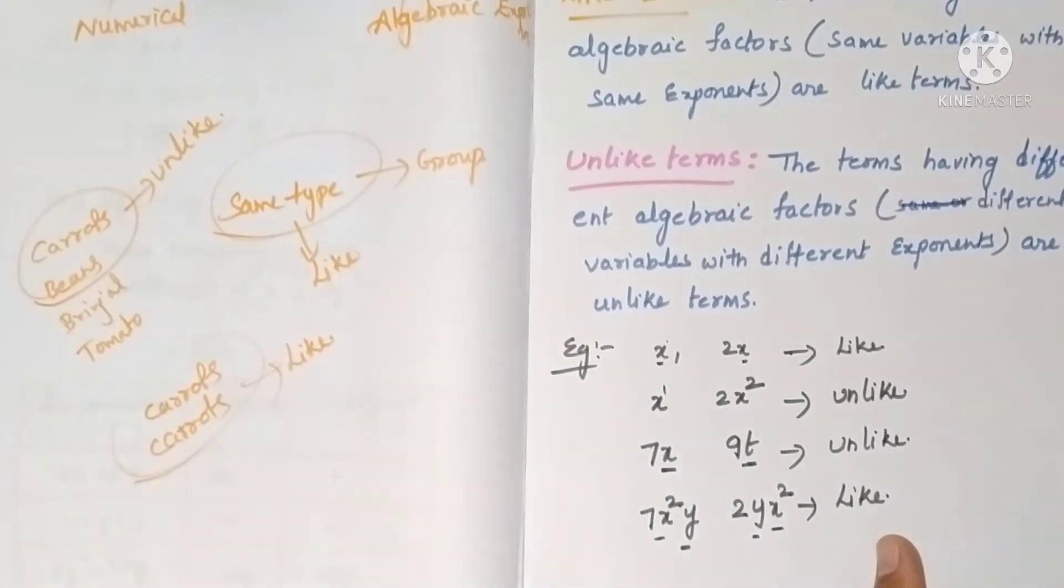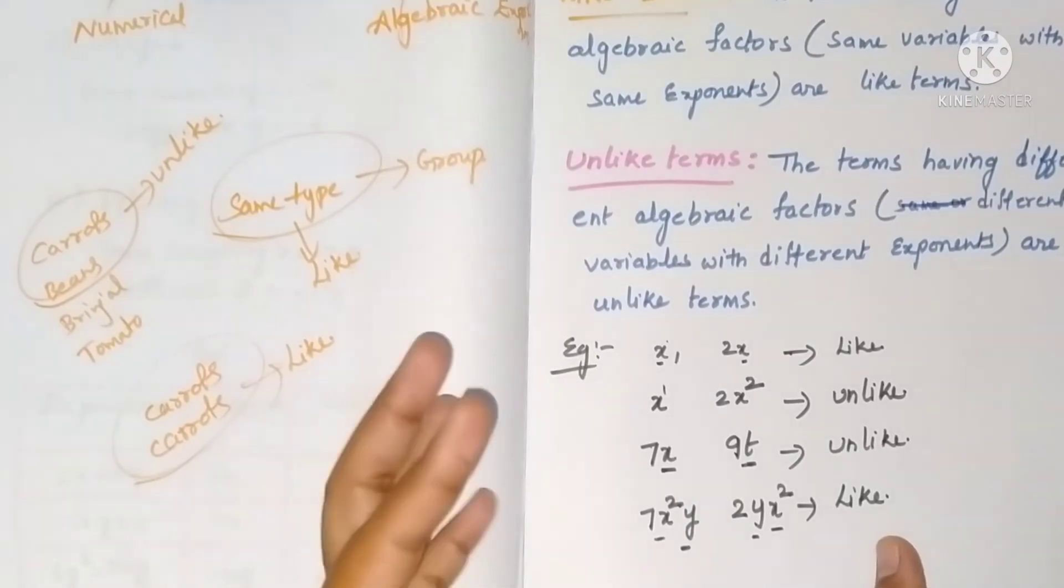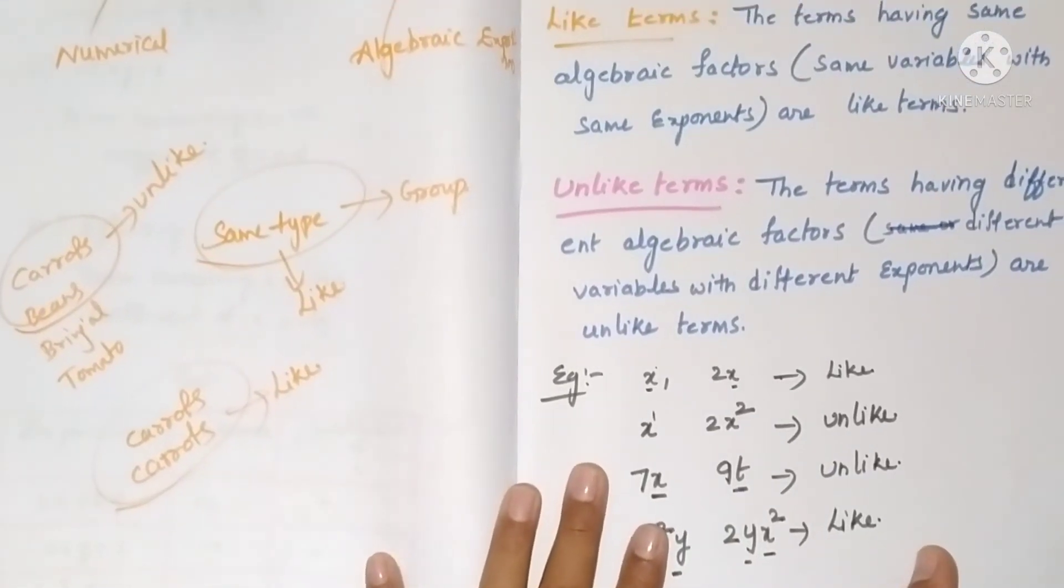Students, the terms which are having same variable with the same exponents are called like terms.